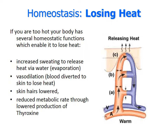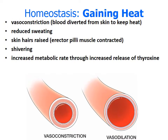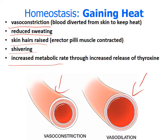When losing heat — when too hot — we can increase sweating to lose heat via water evaporation, vasodilation, lowering skin hairs, and reducing the metabolic rate through lowered thyroxine levels. For gaining heat — staying warm — we use vasoconstriction, reduced sweating, raising skin hairs, shivering, and increasing the metabolic rate. Vasoconstriction means those veins become small, whereas vasodilation makes them much larger.